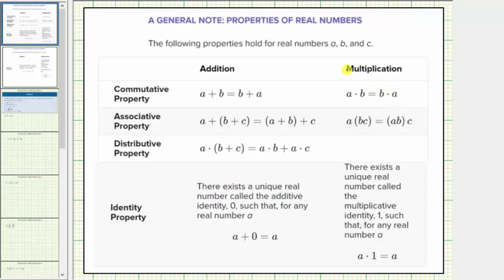Next we have the associative property, which deals with grouping. The associative property of addition states a plus the quantity b plus c equals the quantity a plus b plus c. When we change the grouping of a sum, we are using the associative property. The associative property of multiplication states a times bc equals ab times c. When we change the grouping of multiplication, we are using the associative property.